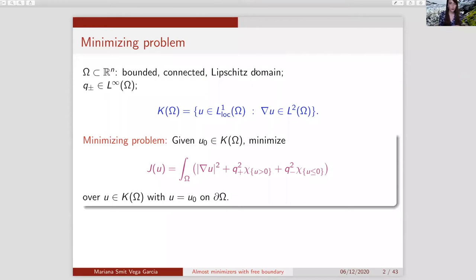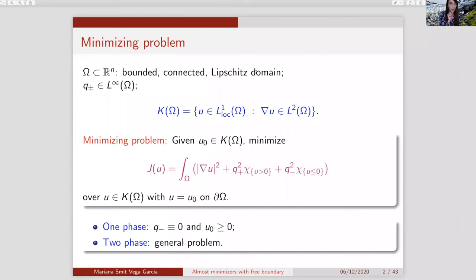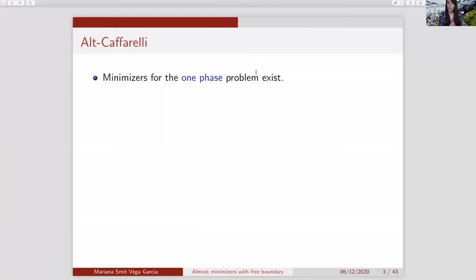A bit of nomenclature: q-minus is the function in front of the characteristic function of the set where u is less than or equal to zero. When q-minus is zero and u-naught, our boundary data, is greater or equal to zero, we have what we call the one-phase problem. In general, we have the two-phase problem.